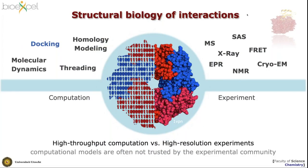We are speaking about structural biology of interactions. Here is a slide showing a collection of methods with experimental methods on the right side — classical structural methods like crystallography, NMR, and cryo-electron microscopy — and on the left side the modeling techniques. These days, it is the combination of computational and experimental approaches that brings you to the full picture of macromolecular complexes.